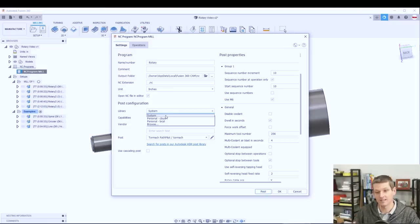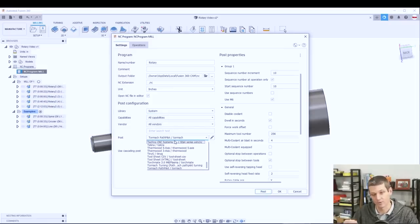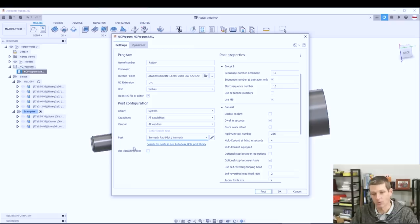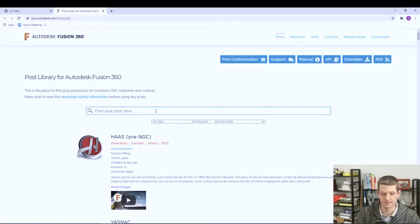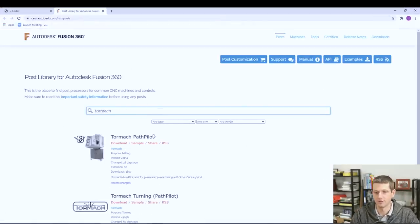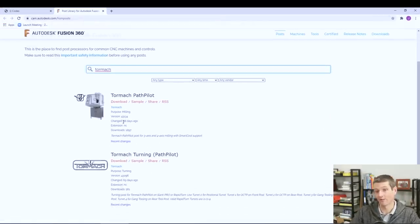The second biggest issue we've heard about is make sure you're using the latest post processor. One of the really cool things about Fusion is there's constantly post processor updates. Generally speaking, the system setting, the system library will have a list with the most recent ones, but it's always worth double checking, especially if you're having problems. And there's a link right below the post to pull up the Autodesk Fusion 360 library. And as an example, if we look at Tormach, you can see that barely over a month ago they pushed another update to this post.